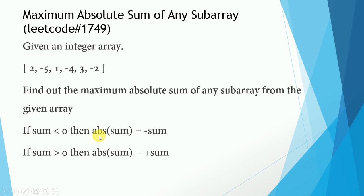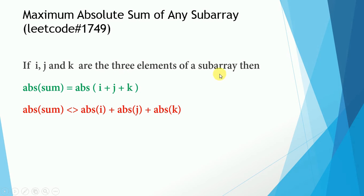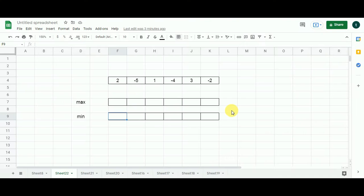Absolute sum means that when the sum is negative, the absolute sum will be the negation of that sum, and when the sum is positive, the absolute sum will simply be positive. If i, j, and k are three elements of a sub array, the absolute sum is the absolute function applied to their addition — not the sum of absolute functions applied on i, j, and k individually. Now let's begin solving this using the bottom-up approach.